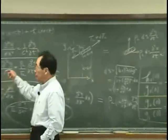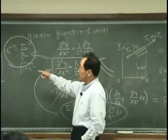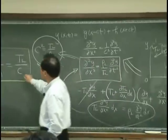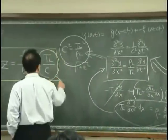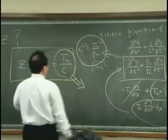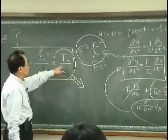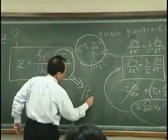So I have this. That means the impedance is proportional to rho L C.